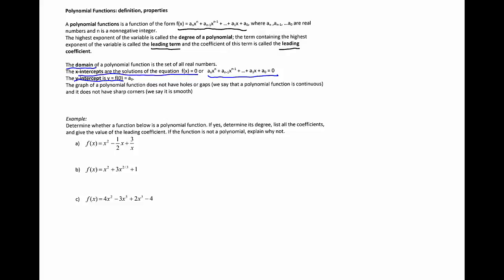In part a, we have the function x^2 - (1/2)x + 3/x. This is not a polynomial because the variable of the last term, 3/x, is not of the general form a number times x to a non-negative integer. 3/x can be written as 3x^{-1}, and -1 is not a positive integer, so this is not a polynomial.